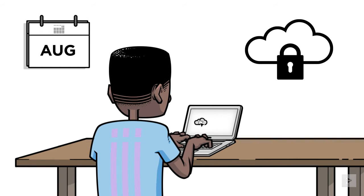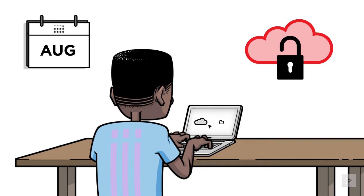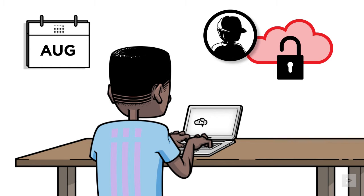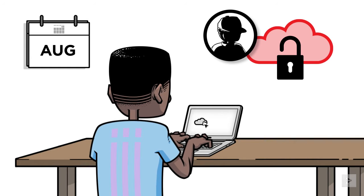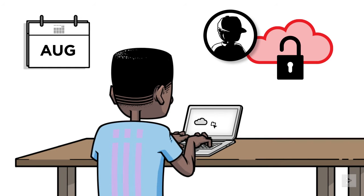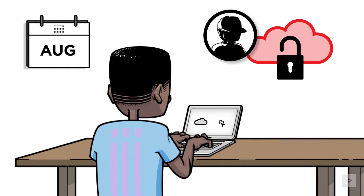But Mark was still learning about the new platform, and he unfortunately missed enabling some critical security settings, which left their cloud environment open to known exploits. One of the problems with default settings is that they are not always comprehensive enough to protect a new environment. They are also well known, and once our attacker identified a vulnerable device, they used that vulnerability and their knowledge of the platform to gain access to Mark's cloud infrastructure.